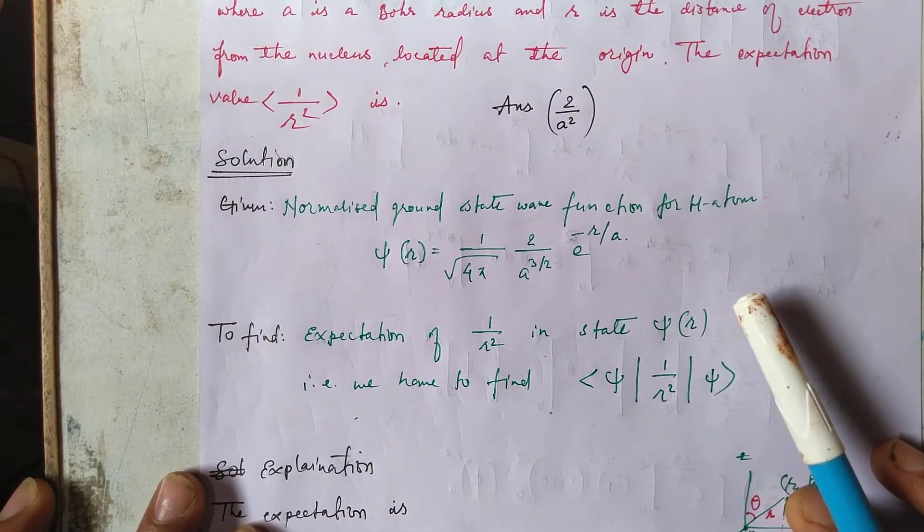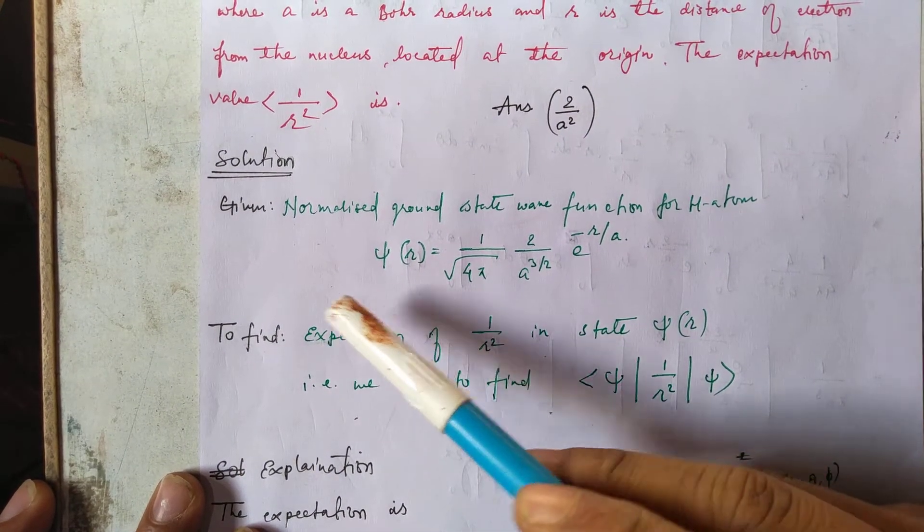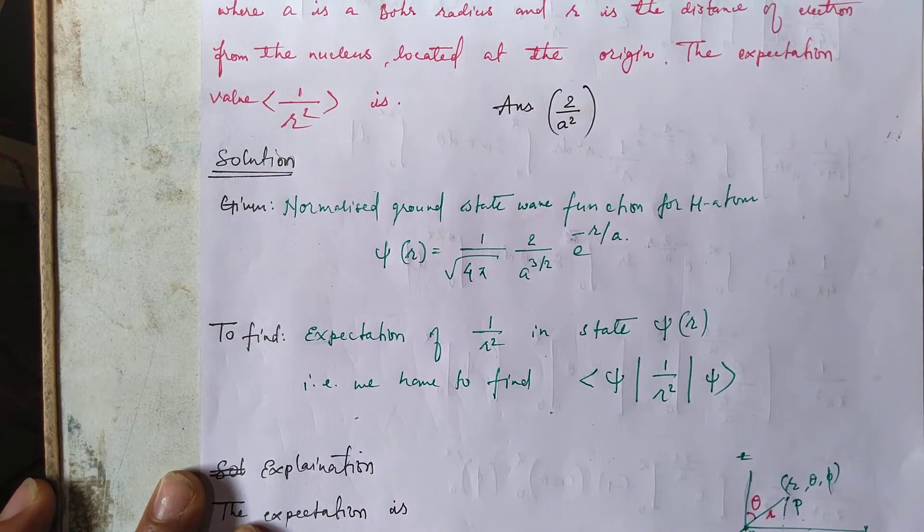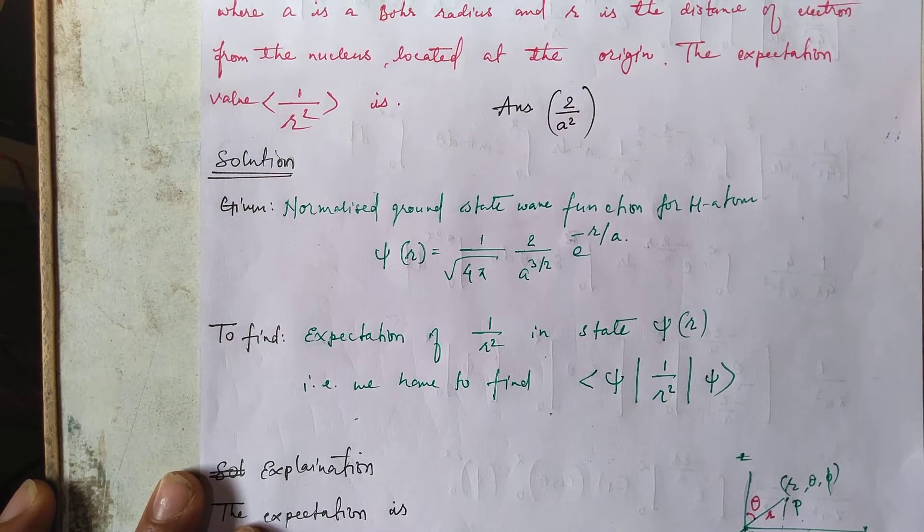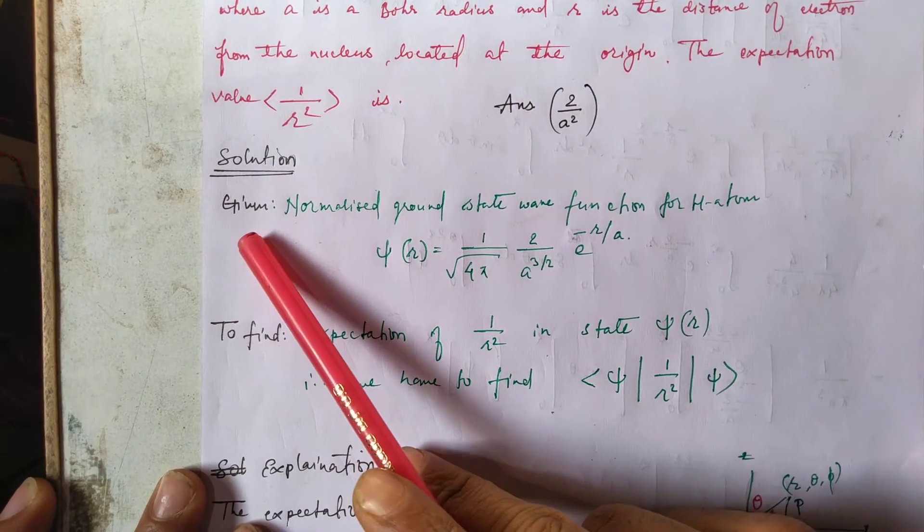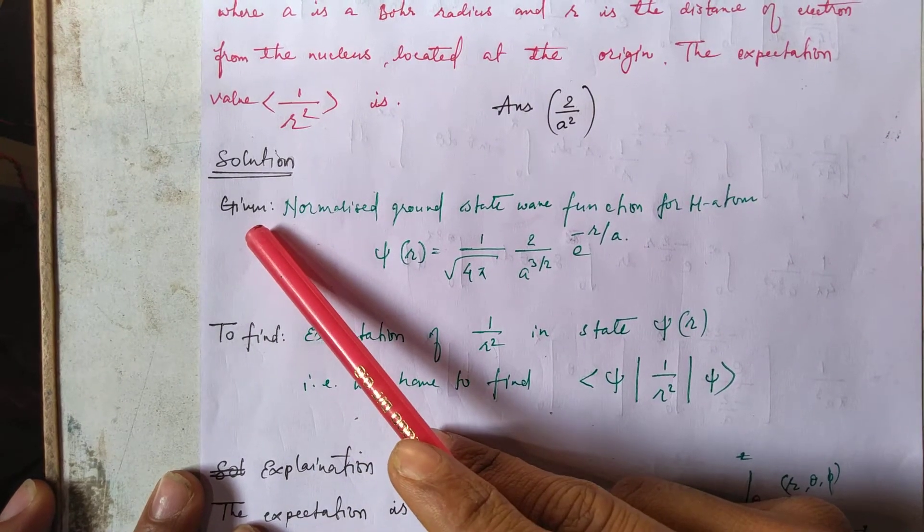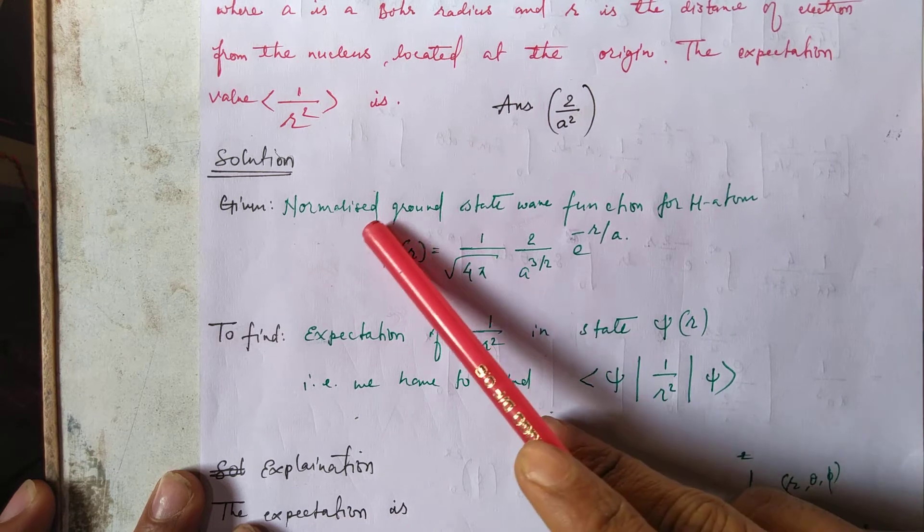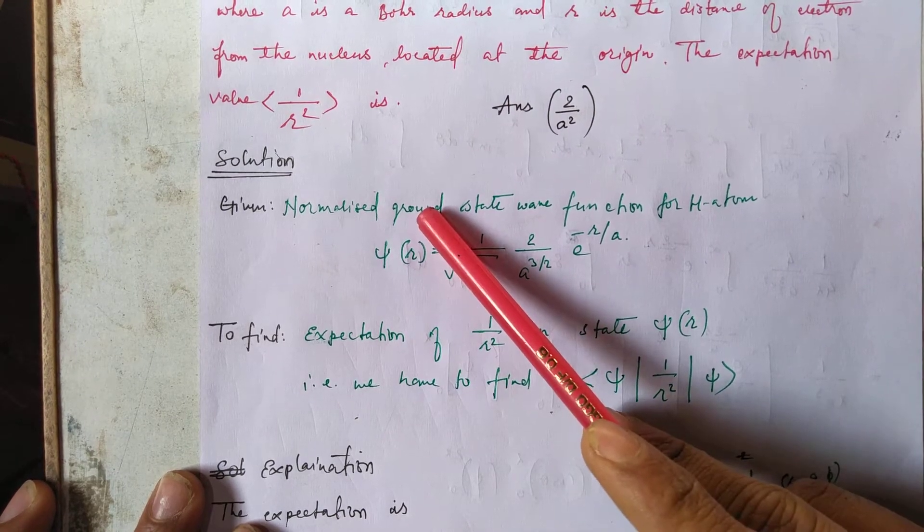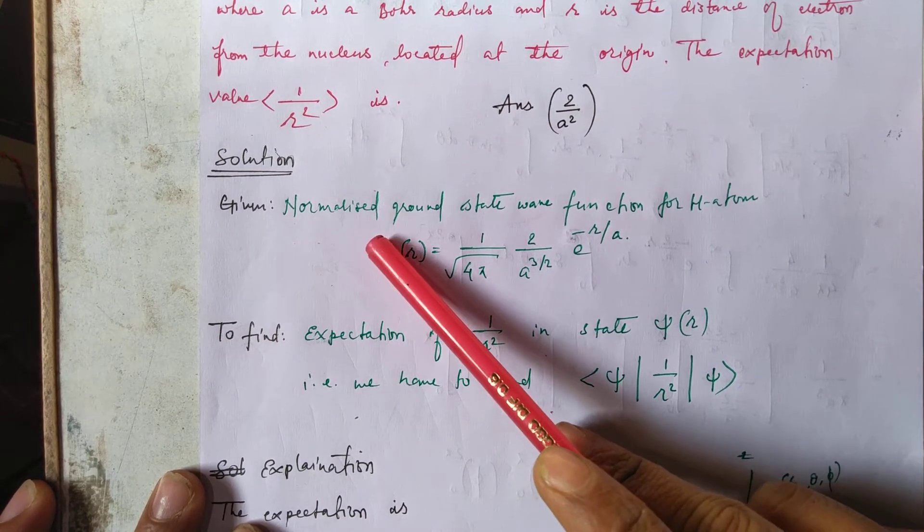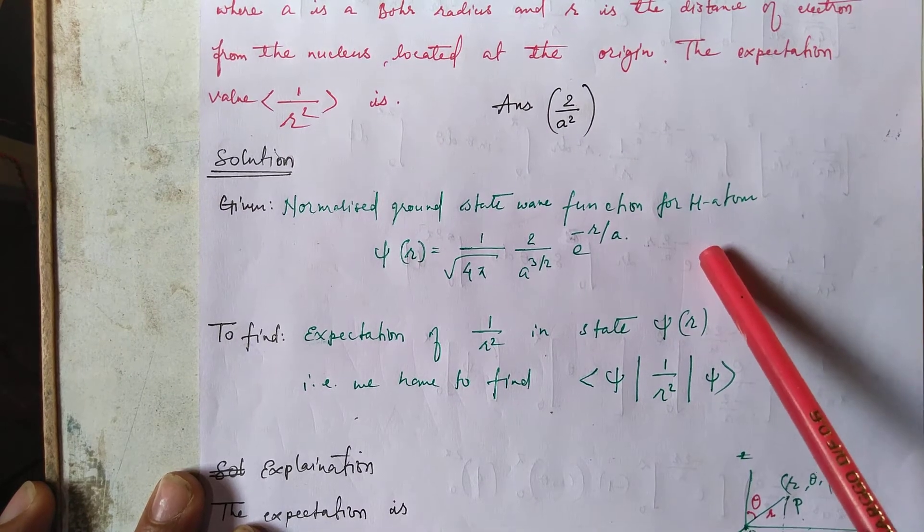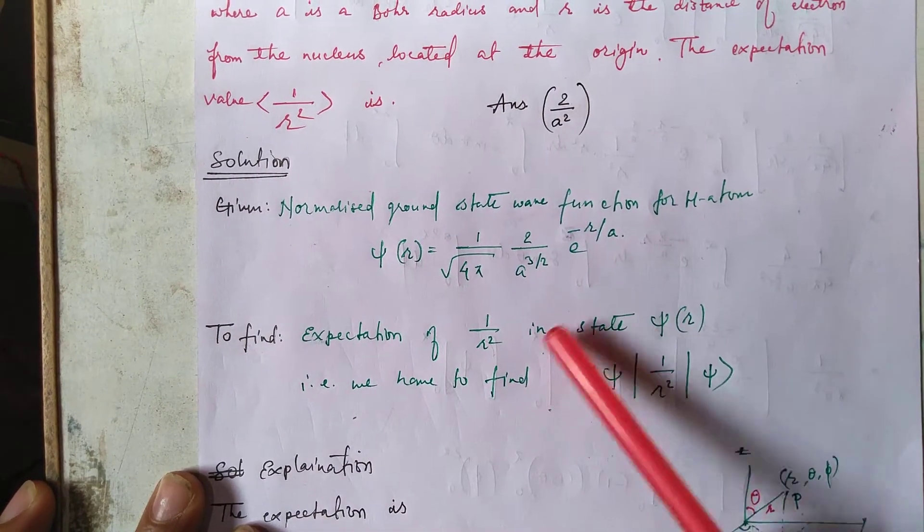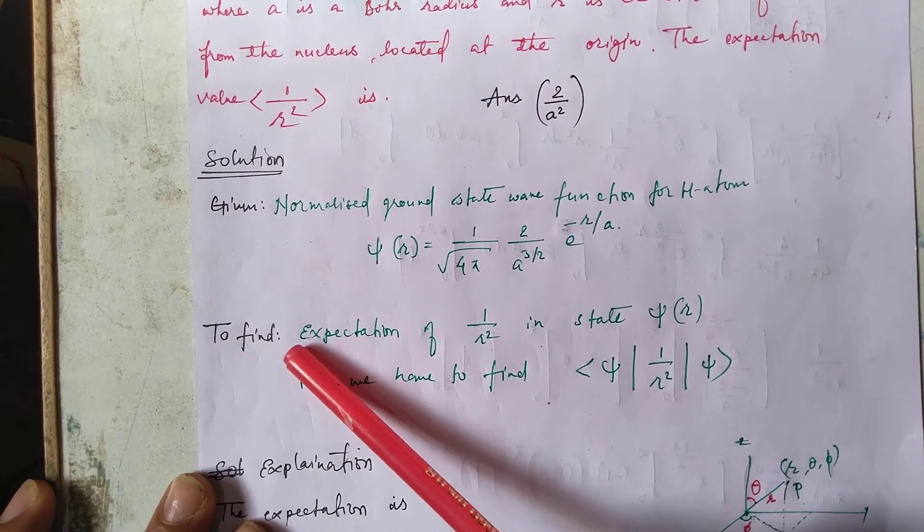You can see the quantities which were given in question. The quantities which were given was psi - this is also called state - and you were given the ground state wave function of the hydrogen atom which is this taken.